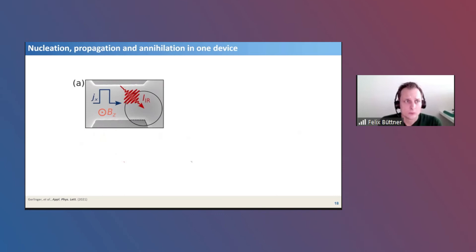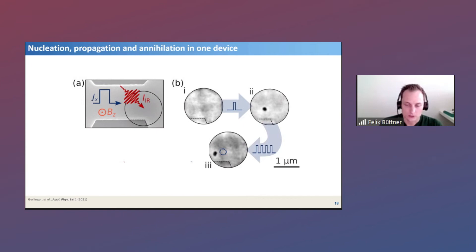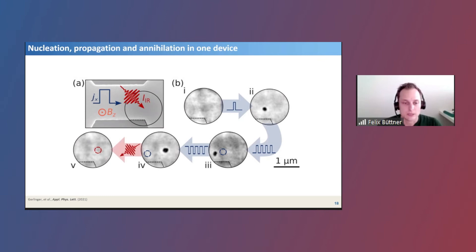We can combine everything into a single device: a magnetic track with current pulse injection, an applied magnetic field, and a laser pulse. Starting from an empty state with no skyrmion, we nucleate a magnetic skyrmion with a current pulse, move it left and right with further current pulses, and then annihilate it with a laser pulse — all performed at constant magnetic field. This is quite device-compatible.